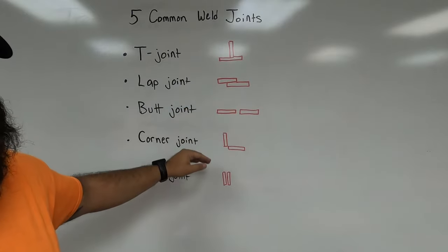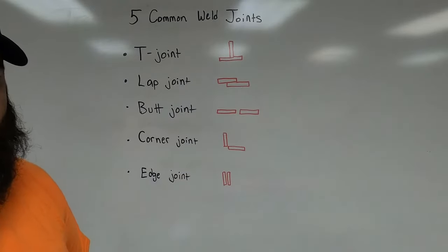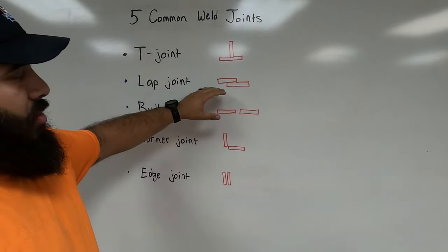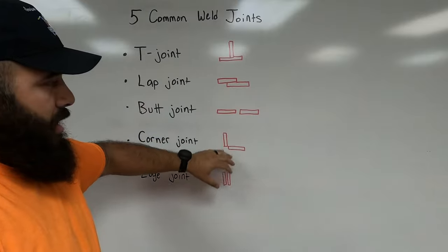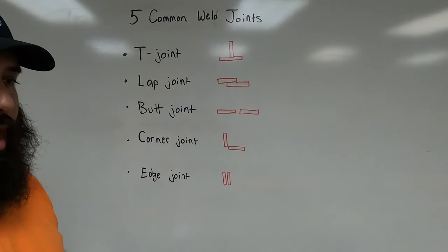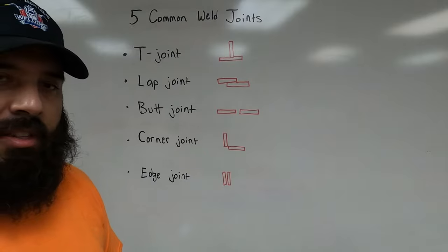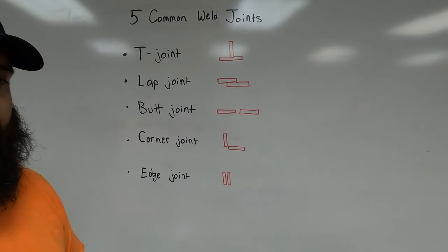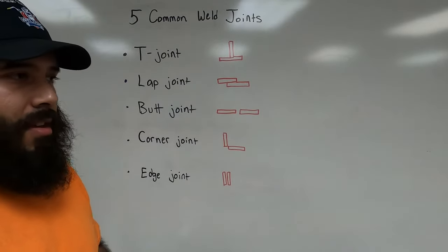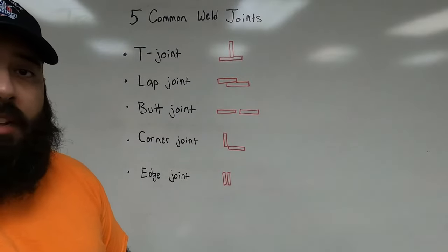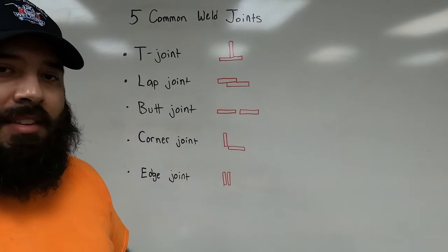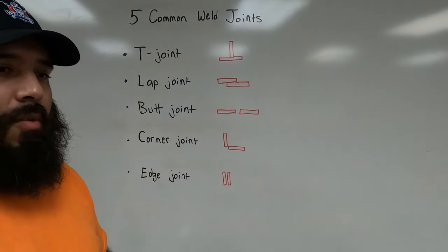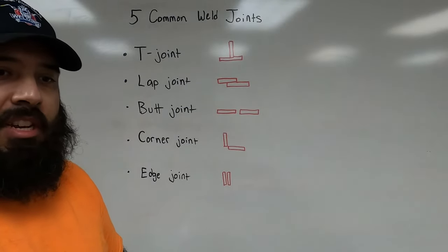The welding symbol tells us how to prepare the material if there's any extra preparation involved. It's going to let us know how we need to weld each joint — things like the size of the weld, how deep we have to penetrate into the material, the type of welding electrode and process we need to use, and also what after-weld procedures apply: chipping, hammering, grinding, or machining.